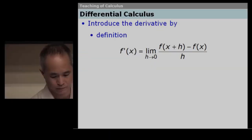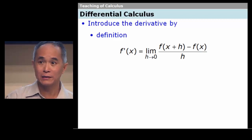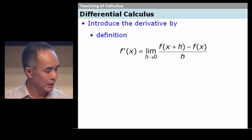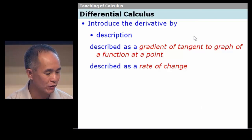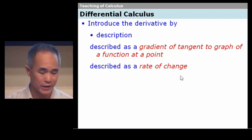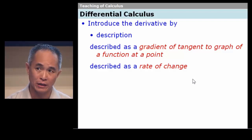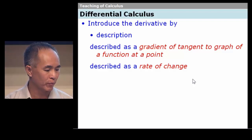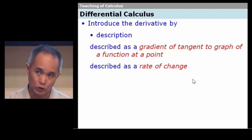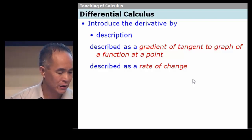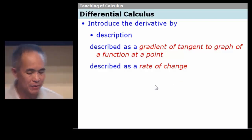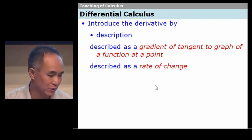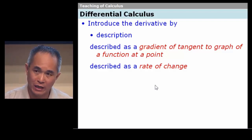So much for the first way of introducing the derivative. Another way is to describe the derivative as the gradient of a tangent to a graph at a point, or as a rate of change. Some textbook writers describe the idea of derivative as rate of change or gradient of tangent to a graph at a point. But in words alone it may not be easy to see or understand.